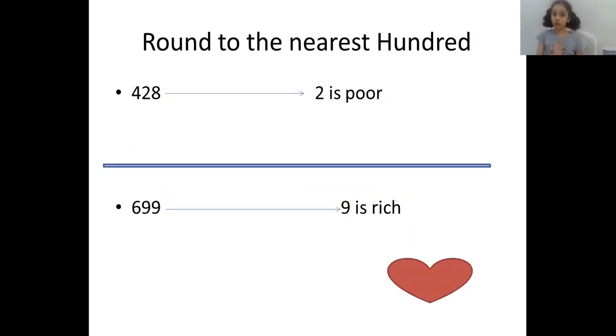Round to the nearest hundred. Four hundred twenty-eight. We will underline four and circle two. Two is poor, so don't give anything. So it will be four hundred.